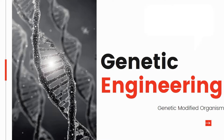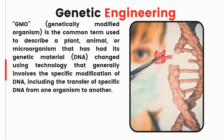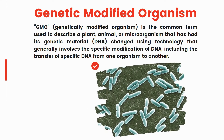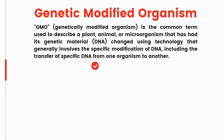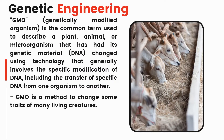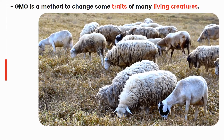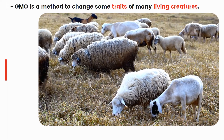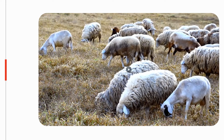In this video, I am going to talk about what I have learned about genetic engineering. GMO, or genetically modified organism, is the common term used to describe a plant, animal, or microorganism that has had its genetic material or DNA changed using technology that generally involves the specific modification of DNA, including the transfer of specific DNA from one organism to another. GMO is a method to change some traits of many living creatures.